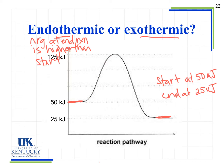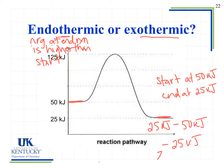For our change in energy, we have 25 kilojoules — which is the final energy — minus 50 kilojoules — which is the initial energy — and what we get is a change in energy of minus 25 kilojoules. And that's true for all exothermic processes: we're going to have a negative sign there.